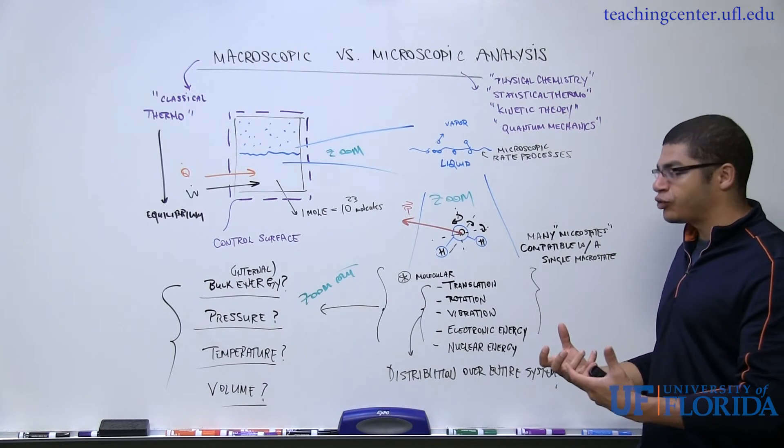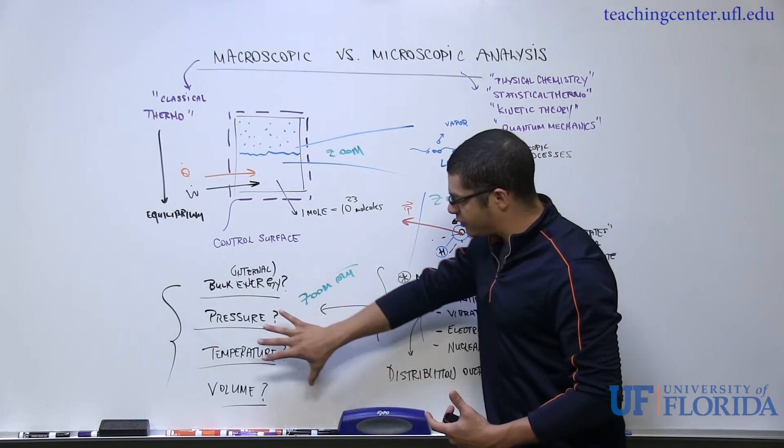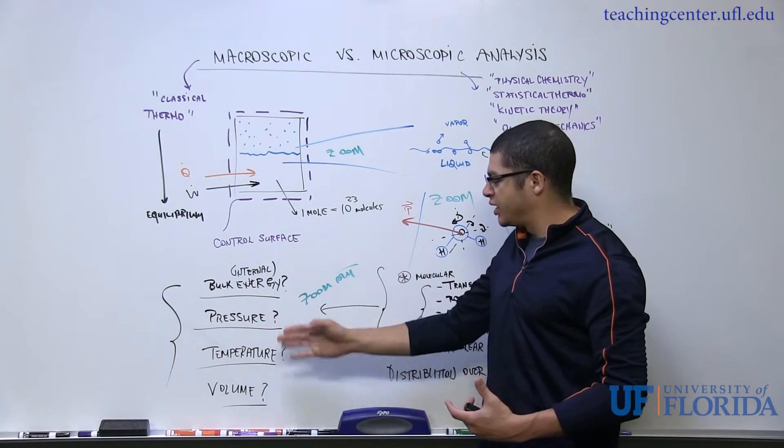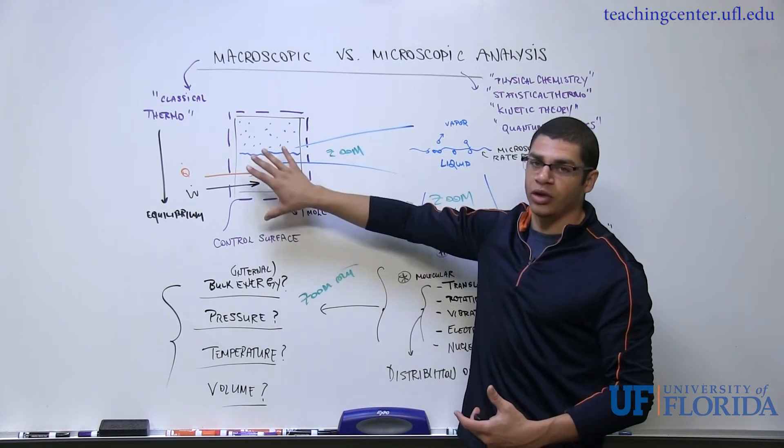This makes for quite a complex system if we were to go down to this microscopic or molecular level, examine the energy, and then somehow use that information to zoom out and determine the bulk properties that we're ultimately interested in to determine the macroscopic classical thermodynamic equilibrium of our system.